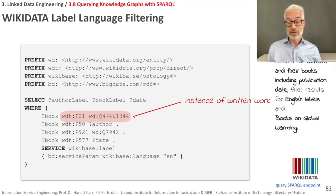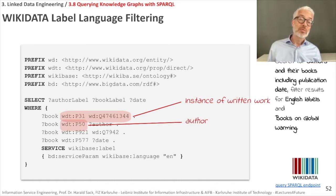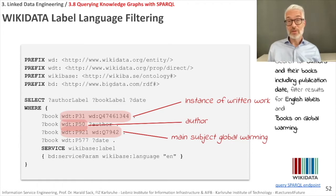We are looking for the property wdt:P31, which is 'instance of'. In our SPARQL query examples you will find commentaries explaining exactly what these P identifiers and Q identifiers mean. For example, wd:Q something is the ID of a written work. The query interface will help you find the corresponding entity and property IDs through auto-suggest.